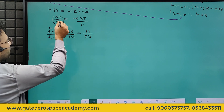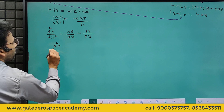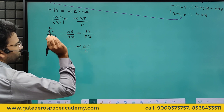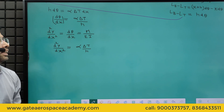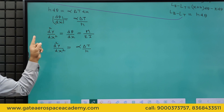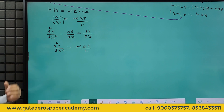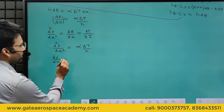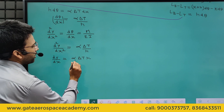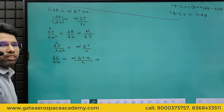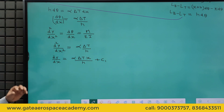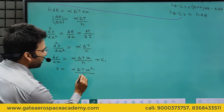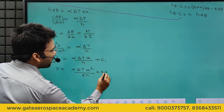Since dθ/dx = d²y/dx², we can write d²y/dx² = α·ΔT / h. We can now integrate this twice. Integrating once: dy/dx = α·ΔT·x / h + C1. Integrating again: y = α·ΔT·x² / (2h) + C1·x + C2.